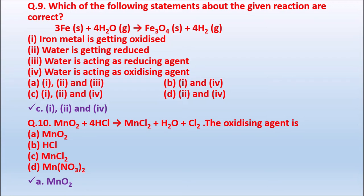Question 10: MnO₂ + 4HCl → MnCl₂ + H₂O + Cl₂. The oxidizing agent is — Option A: MnO₂. Option B: HCl. Option C: MnCl₂. Option D: Mn₂O₃. In this reaction, the oxidizing agent is MnO₂. That is the correct answer.